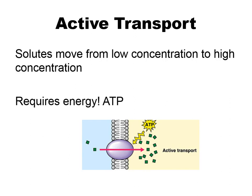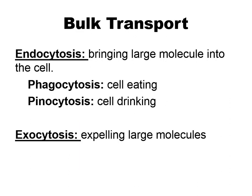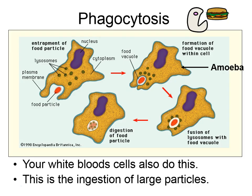Next we have active transport, and this is where solutes move from low concentration to high concentration — going against the concentration gradient — and that is going to require some energy. You're going to use some ATP to pump that stuff across. And then you have bulk transport, which is where you're trying to get big stuff into or out of the cell. You have endocytosis, which is bringing it into the cell, and exocytosis, which is getting stuff to exit the cell.